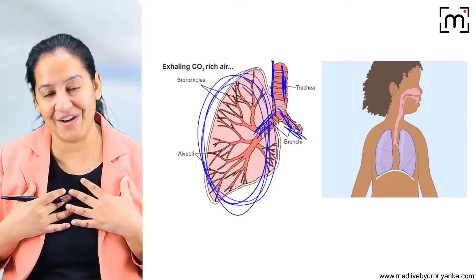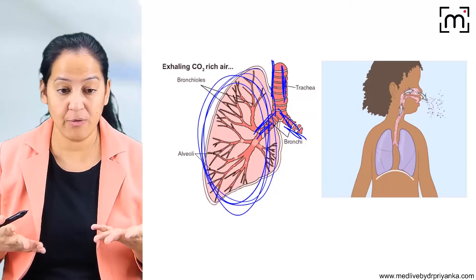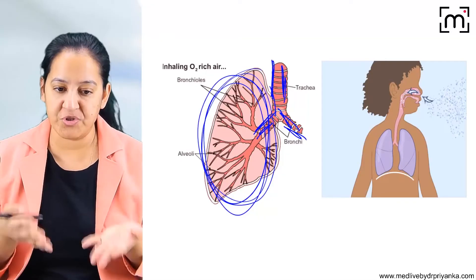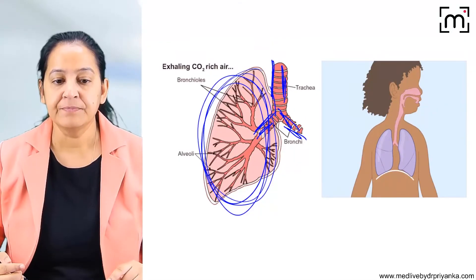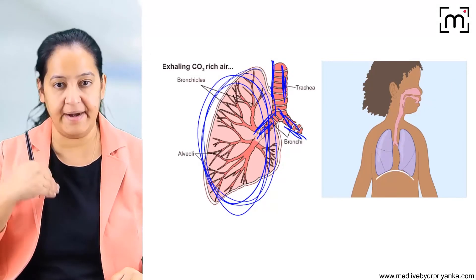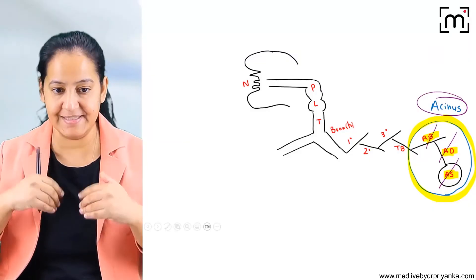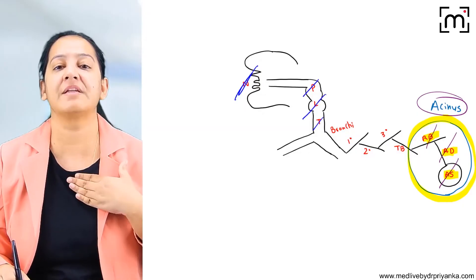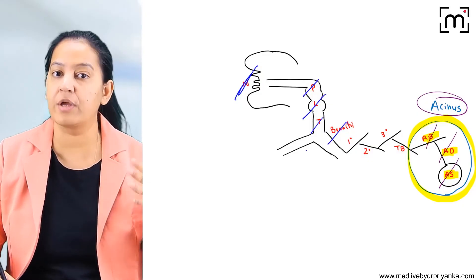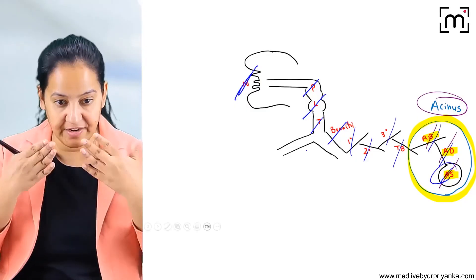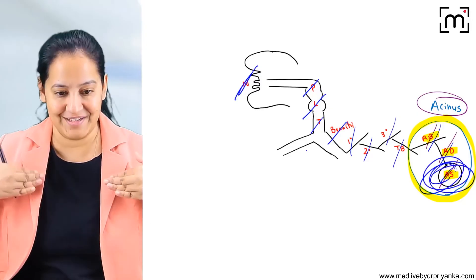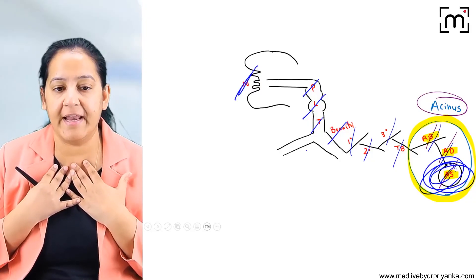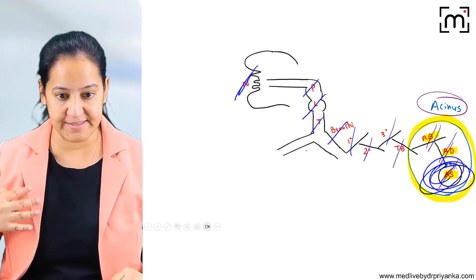Why has God provided us lungs? The function of the lungs is to inhale and exhale. When we inhale, the oxygenated air from the atmosphere enters through the nose, passes through the pharynx, larynx, trachea, bronchi, bronchioles — primary, secondary, tertiary, terminal, respiratory — through the alveolar ducts, and finally reaches the alveolar sacs. We have millions of alveolar sacs in our lungs. Whatever we inhale, the air ultimately reaches these balloon-like alveolar sacs.